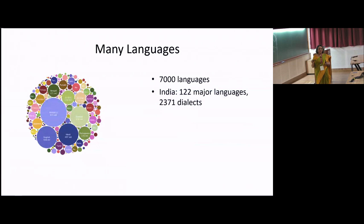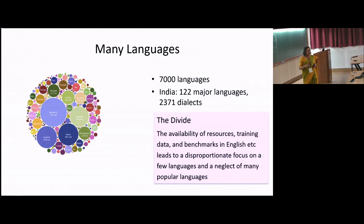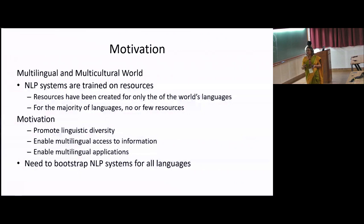Just some basic introduction: as all of you know, there are many languages in the world — 7,000 major languages in the world, 122 major languages in India. This gives rise to the divide about the availability of resources, training data, and benchmarks, which are not available for a majority of the world's languages. Therefore, the benefits of natural language technology, taken for granted in developing systems in English and other rich languages, have not reached many other users. Our interest is to see how one can build systems which can work in all languages, especially low-resource languages.